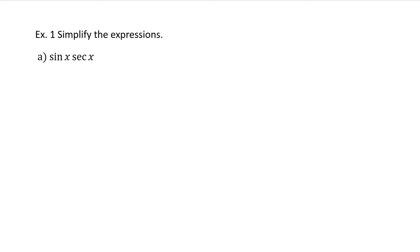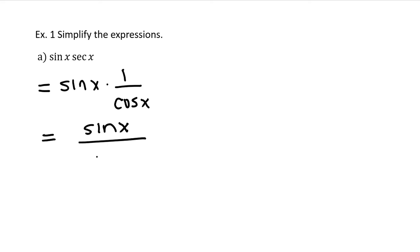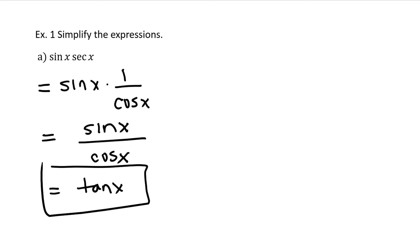Simplify the expression: sine x times secant x. It is simpler to express something as one term instead of a product of two. I begin this problem by converting everything to sines and cosines. So sine x stays put. Secant x is the reciprocal for 1 over cosine x. Then I can multiply across and I'll have sine x divided by cosine x, which is tangent x. So now we have simplified that expression.